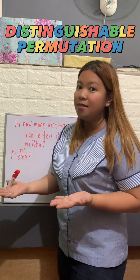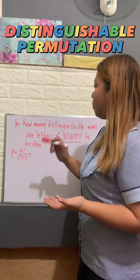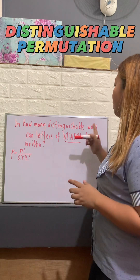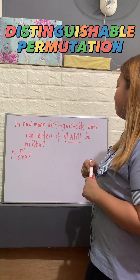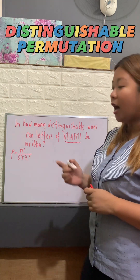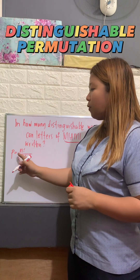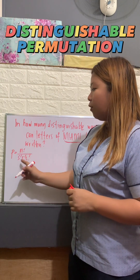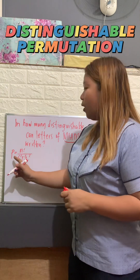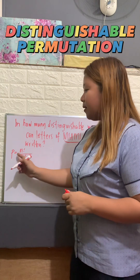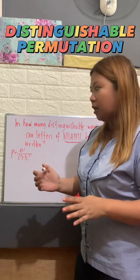Now, let's talk about distinguishable permutation. I have a problem here: in how many distinguishable ways can the letters of MIAMI be written? Our formula for distinguishable permutation is P is equal to N factorial over S factorial, R factorial, and T factorial, where S, R, and T are the repeated letters or objects.